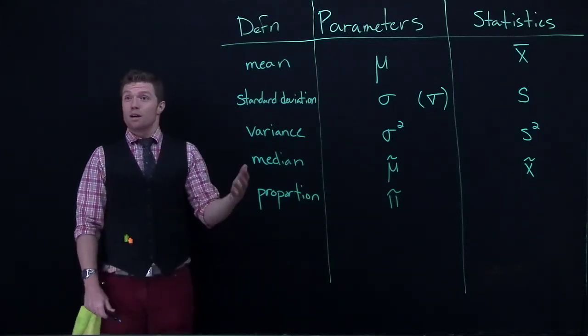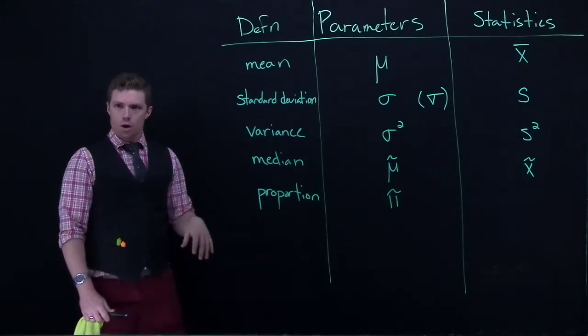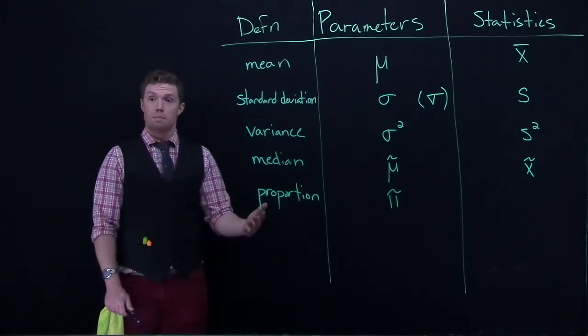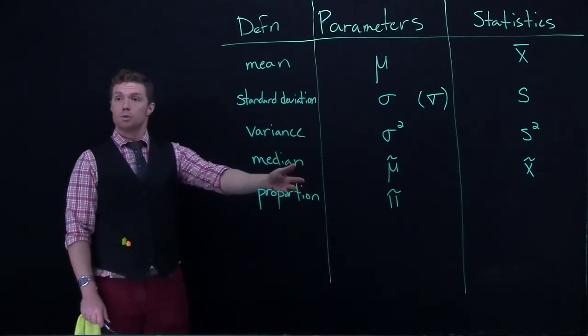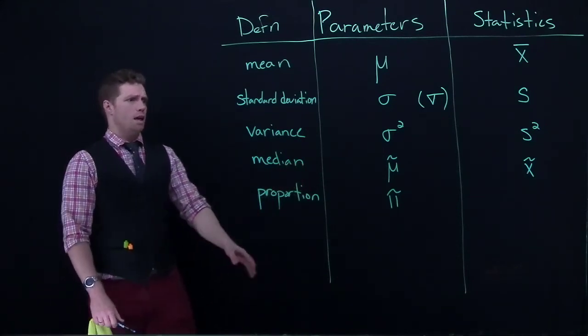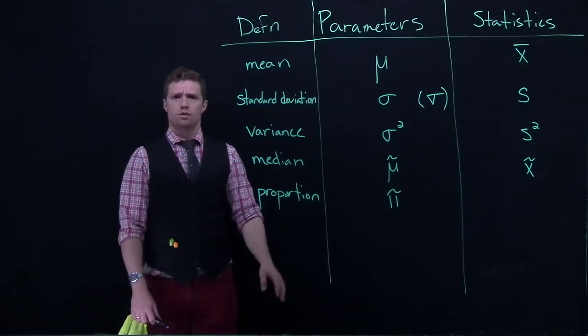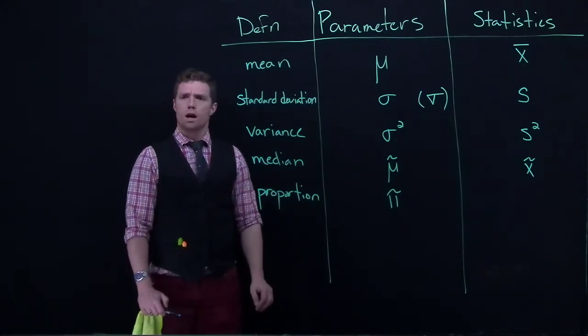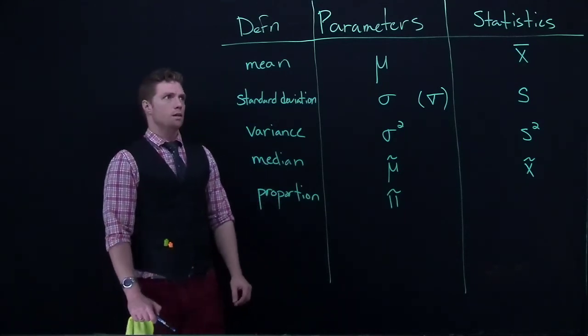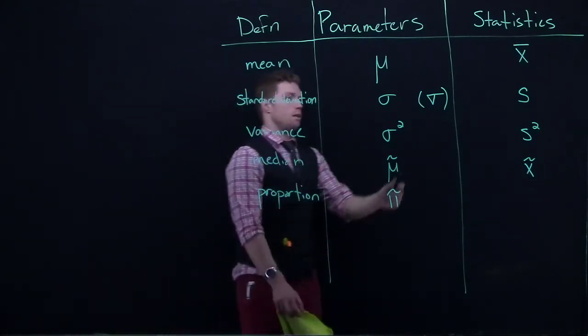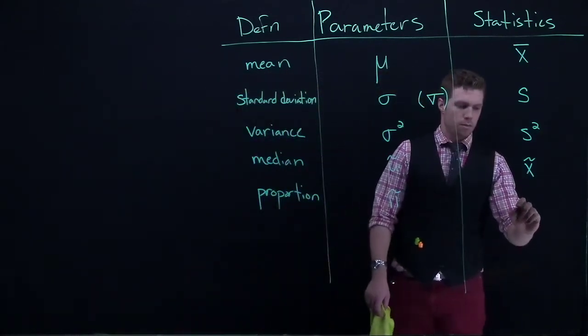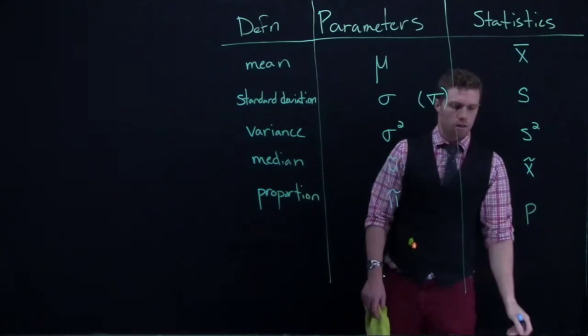If that ever comes up, I will be sure that you know whether we're talking about the constant pi or the population proportion pi. But in this class, if you see pi, it's pretty safe to assume that we're talking about the population proportion. And in our statistics, if we're taking it from a sample, it's just the letter P.